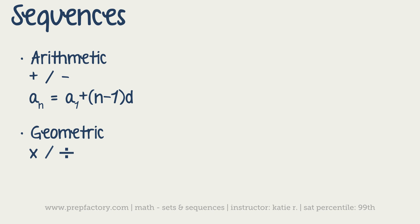For a geometric sequence, you have a similar formula: a_n = a_1 · r^(n − 1), where a_1 is the first term and r is the common ratio — what you're multiplying by — raised to the (n − 1) power.